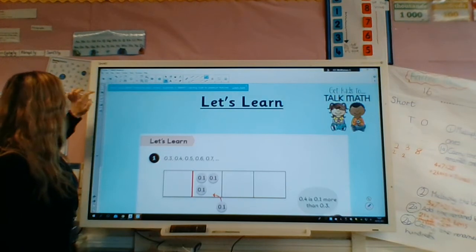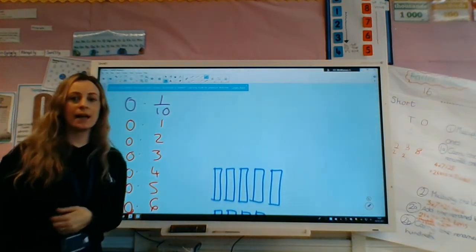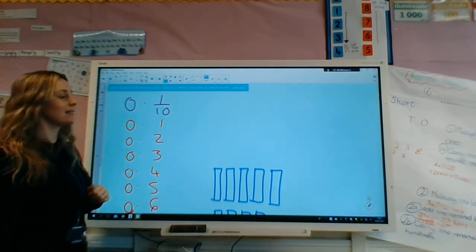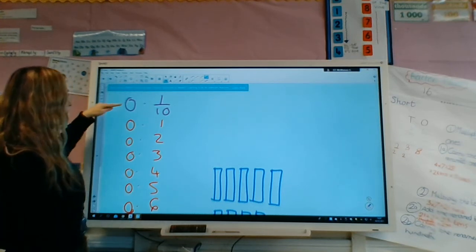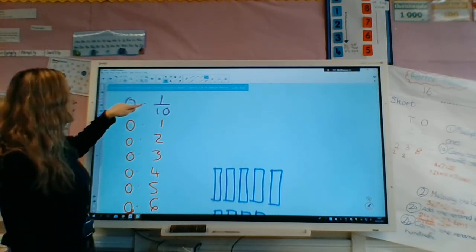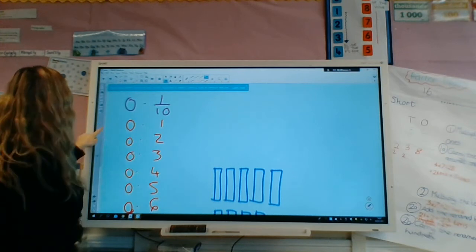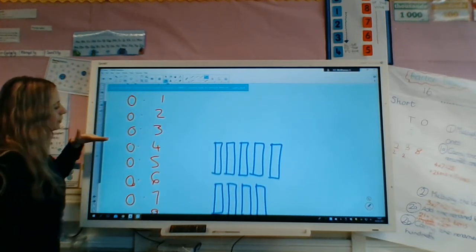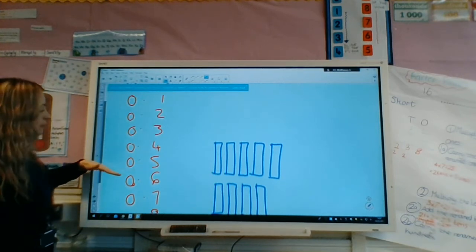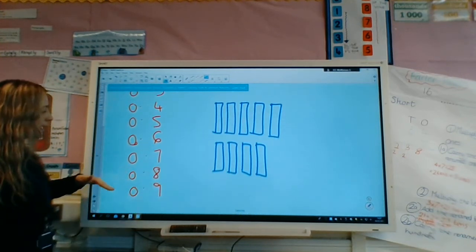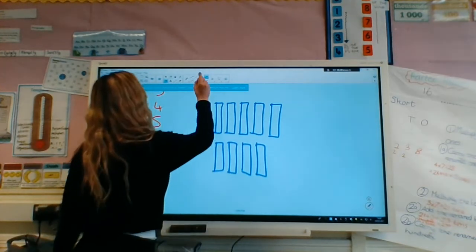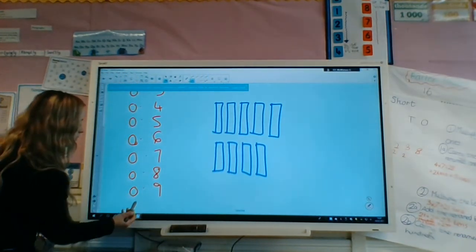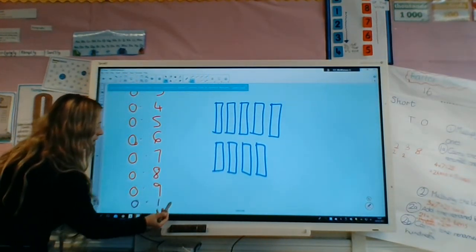And then today we are looking at decimals again, but we're looking at decimals and patterns in decimals. So here I've got my place value. I've got my ones and then my tenths. And I've just listed the tenths. We've got 0.1, 0.2, 0.3, 0.4, 0.5, 0.6, 0.7, 0.8, and 0.9. And I want to know what comes next.